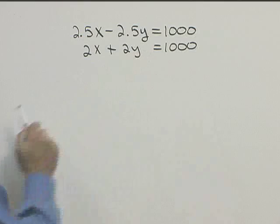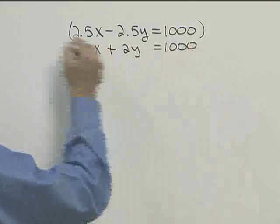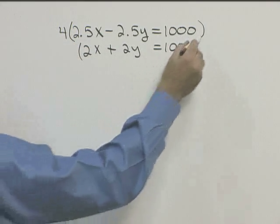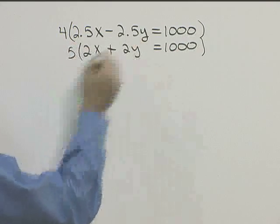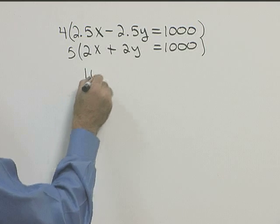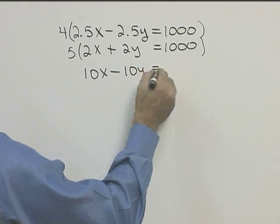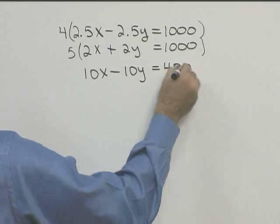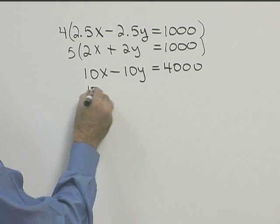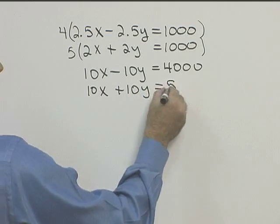So now let's multiply and see if we can drop out X or Y. Well let's drop out our Y's. Let's multiply this equation by 4, and this equation by 5. So if we multiply the first by 4, 4 times 2.5 will give us 10X minus 10Y equals 4,000. Multiplying the second equation by 5, we get 10X plus 10Y equals 5,000.